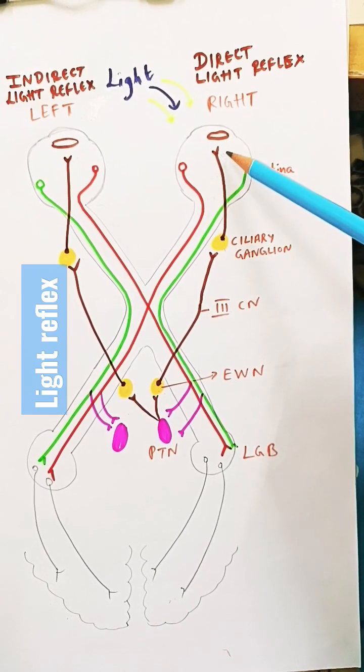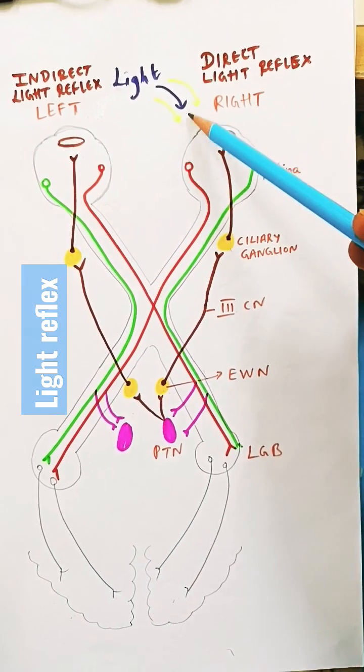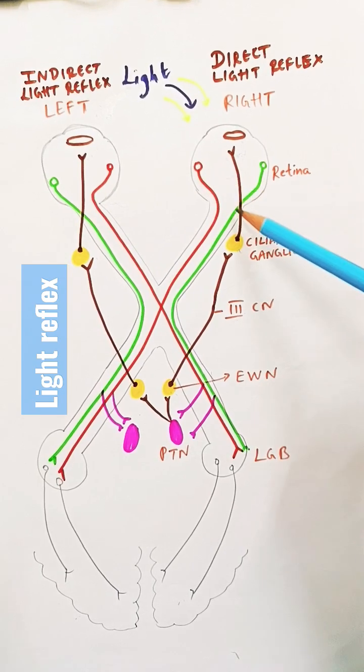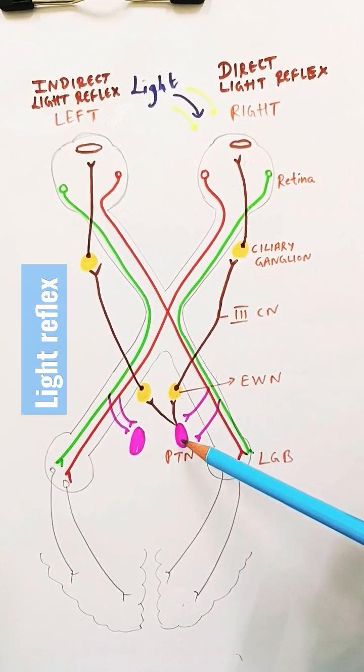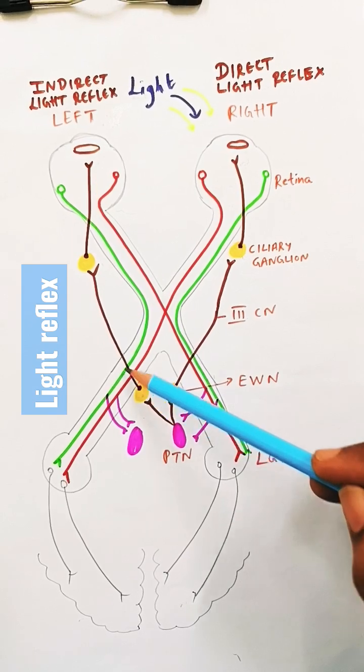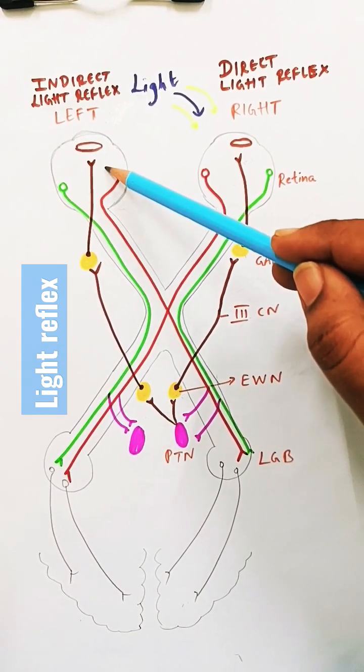When light is thrown into the right eye, the right pupil constricts - this is the direct light reflex. The pre-tectal nucleus also stimulates the left Edinger-Westphal nucleus and causes contraction of the left pupil, which is called the indirect light reflex.